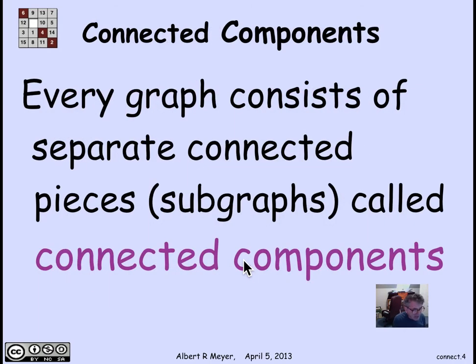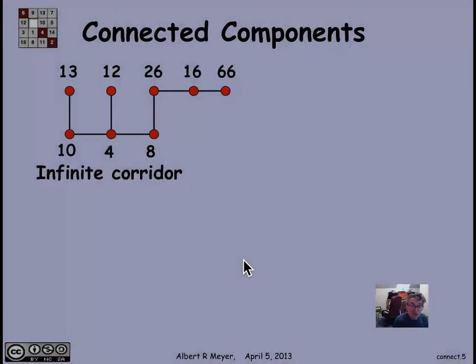Now, every graph you can think of as broken up into the mutually connected pieces, or subgraphs, which are called its connected components. So let's look at a simple example.